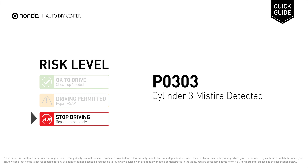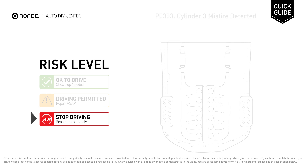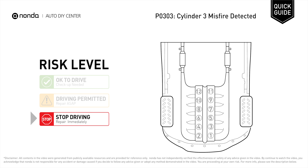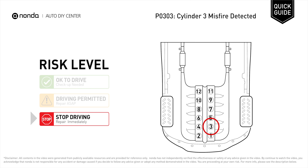P0303 is a diagnostic trouble code for Cylinder 3 misfire detected. Under this circumstance, stop driving and repair your vehicle immediately. It indicates that cylinder number 3 is experiencing misfires.